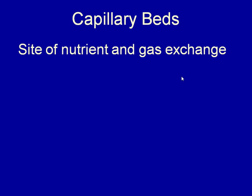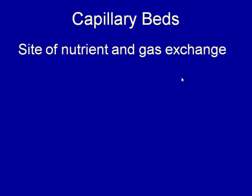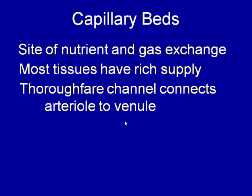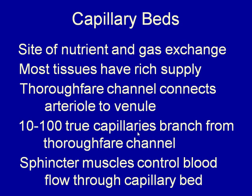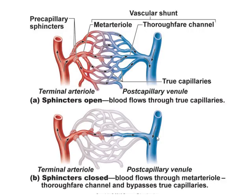Capillary beds are where nutrient and gas exchange occurs, and most tissues have a very rich supply of capillaries. A few don't — cartilage and ligaments do not have a good blood supply. The thoroughfare shunt connects the arteriole to the venule. Off of that, there are 10 to 100 true capillaries that branch into the tissues. Sphincter muscles control whether blood flows into the true capillaries or bypasses through the shunt.